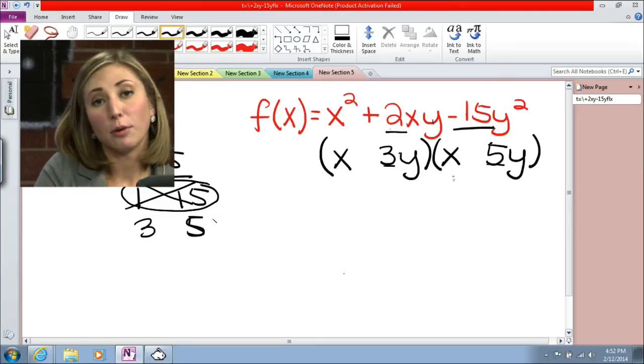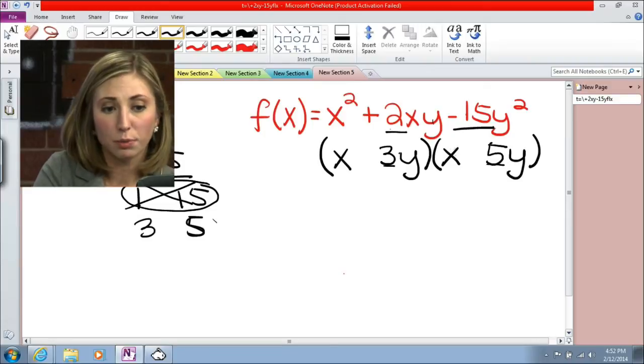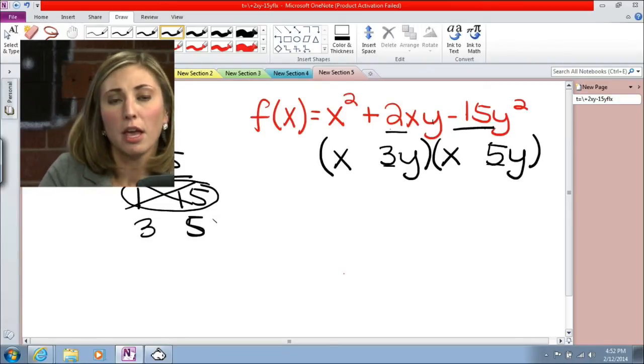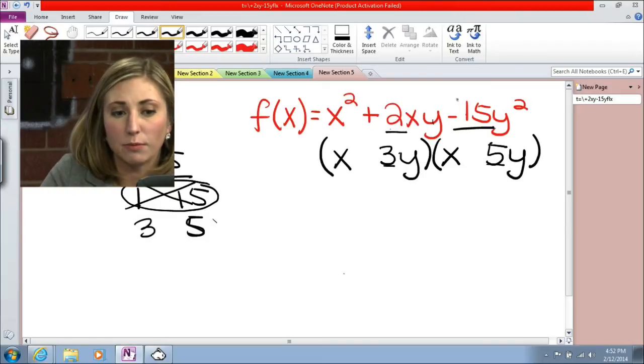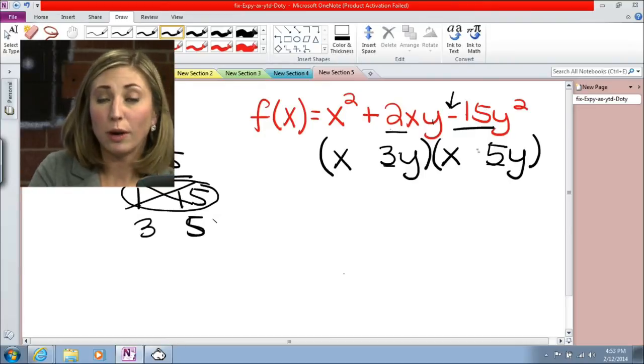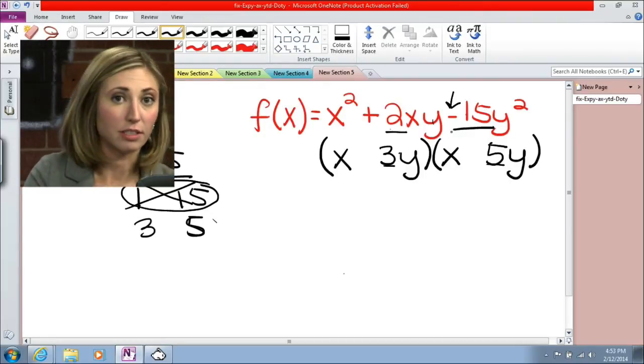Now, the last thing that we need to consider is the signs. Are we going to do plus, plus, minus, minus, plus, and minus? How is that going to go? And so the way that we decide that is first by looking at the sign in front of that 15, so negative. So the only way to multiply two numbers together to give us a negative is to have one of them be negative and one of them positive.